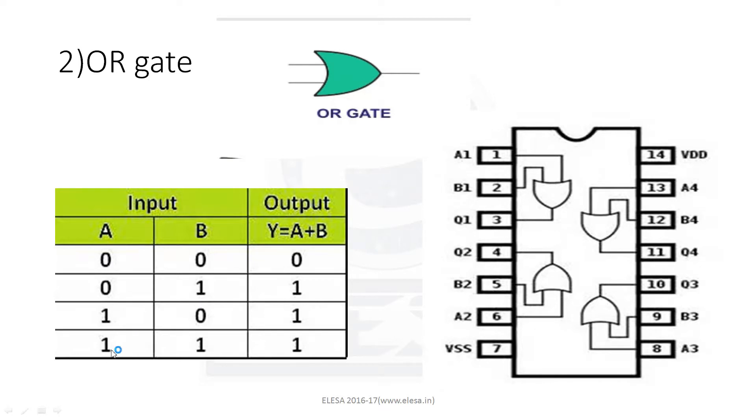So, note that here, A equals 1, B equals 1, then output remains 1. In digital, 1 plus 1 is 1. The IC number for OR gate is 7432. The input-output combination for this is similar to the AND gate combination.